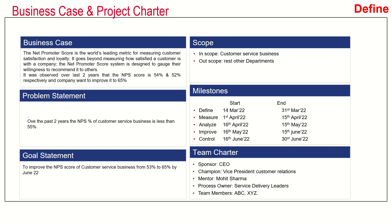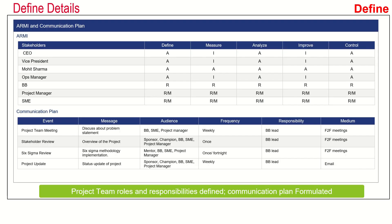The team charter includes the sponsor — the company CEO. The champion is Vice President of Customer Relations. The mentor is Mohit Sharma. The process owner is the Service Delivery Leader, and the team members are ABC and XYZ. Keeping all this in mind, the team created an ARMI chart and a communication plan.